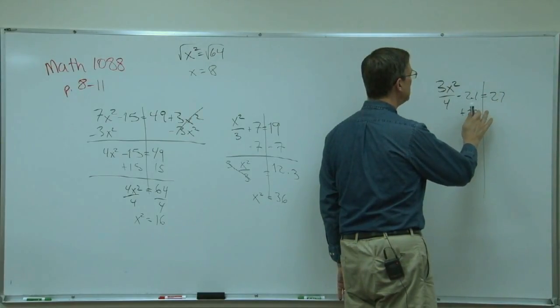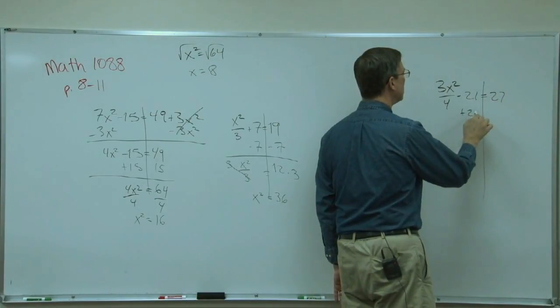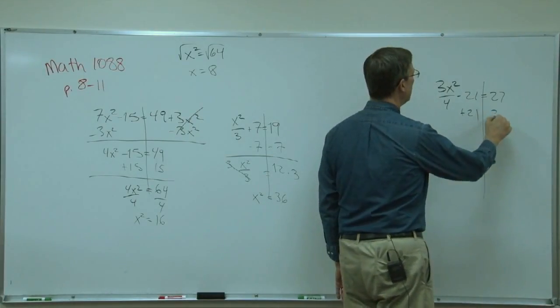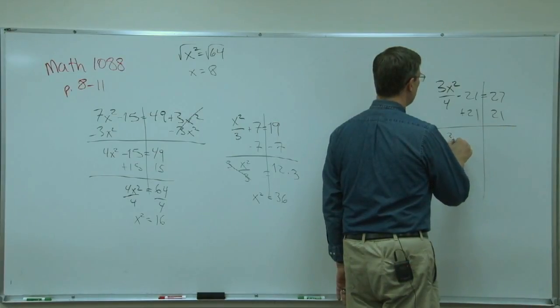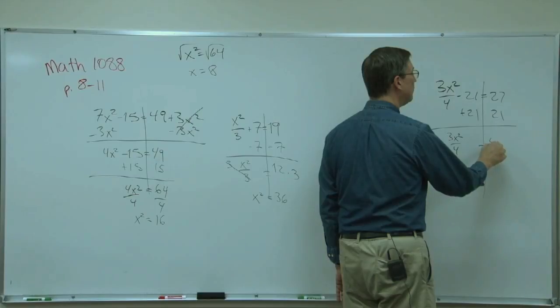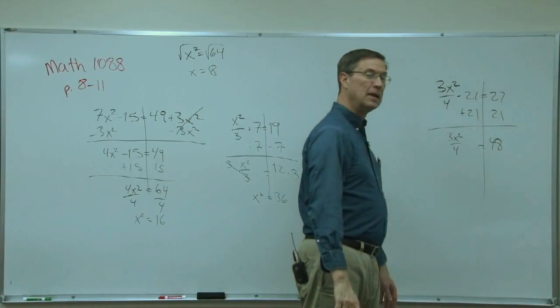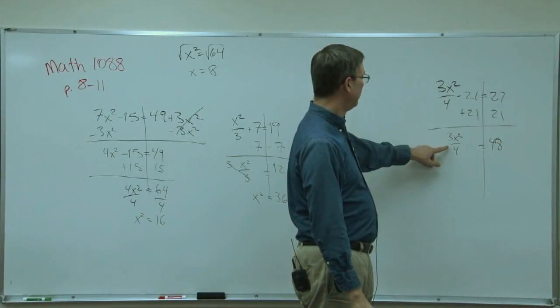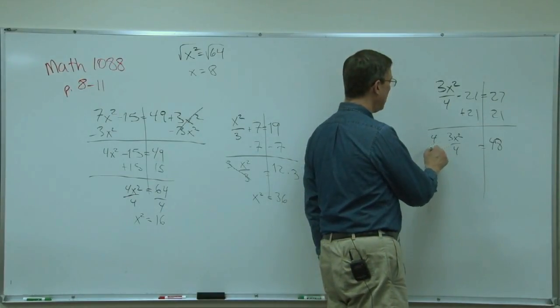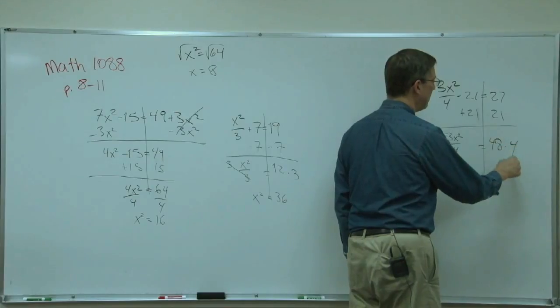Add the 20. See, now I'm making my 1s look like 7s. I can't do those. I'm just going to do that. So 21. So we'll have 3x squared over 4 equals 48. Uh-oh. What do I do with this 4?